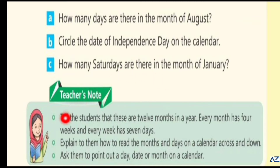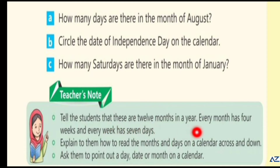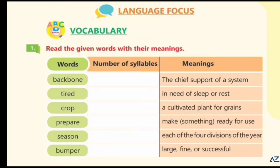Teacher's note: tell the students that there are twelve months in a year. Every month has four weeks and every week has seven days. Explain to them how to read the months and days on a calendar across and down. Ask them to point out a day, date, or month on a calendar.